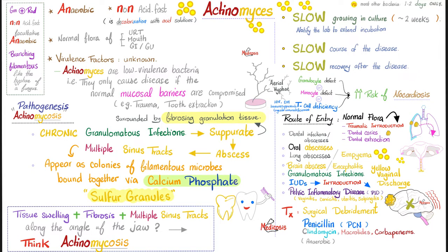Here is the story: we start with a chronic granulomatous infection. This granuloma will suppurate — make pus. A collection of pus is called an abscess. The abscess will open with multiple sinus tracts. This suppuration will be surrounded by fibrosing granulation tissue that is hard as wood. You will see colonies of filamentous microbes bound together by calcium phosphate. These calcifications look yellowish-white — the so-called sulfur granules. So what is actually in the sulfur granules? Calcium phosphate and Actinomyces — not real sulfur.